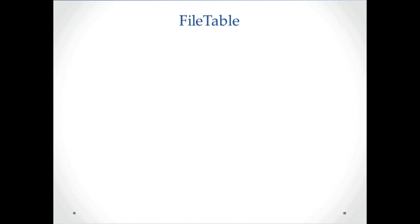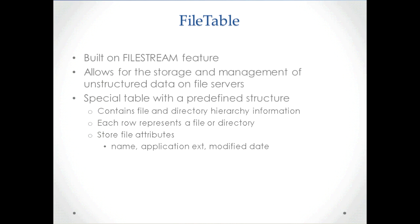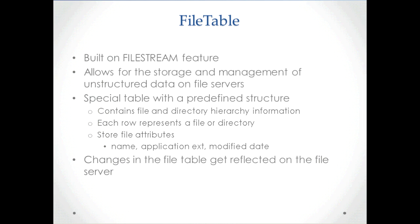There is a new file table feature, which is built on the file stream feature introduced in 2008. It gives you the ability to manage files on a file server through a special table in SQL Server. The table contains file and directory hierarchy information — each row represents a file or directory and contains the attributes of those files. Applications can use this to gain access to the file system to manipulate files. If the name of a file is changed in the file table, the name of the file on the file server changes as well.